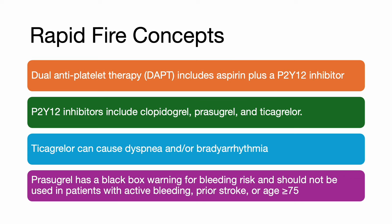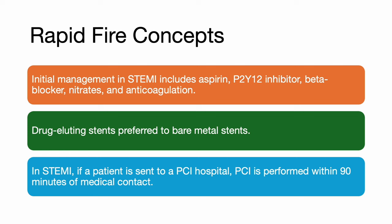Dual antiplatelet therapy, DAPT, includes aspirin plus a P2Y12 inhibitor. P2Y12 inhibitors include clopidogrel, prasugrel, and ticagrelor as part of the management of ST elevation MI. Ticagrelor can cause dyspnea and bradyarrhythmia, and prasugrel has a black-box warning for bleeding risk — it should not be used in patients with active bleeding, prior stroke, or in patients over the age of 75. Initial management in ST elevation MI includes aspirin, P2Y12 inhibitor, beta blocker, nitrates, and anticoagulation. Morphine and oxygen are not part of the initial management.